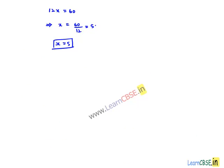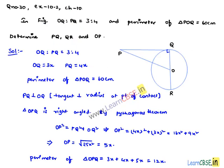We need to find PQ, which equals 4x, that is 4 times 5 equals 20 centimeters.